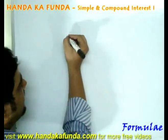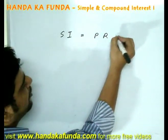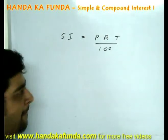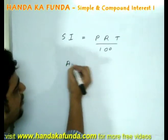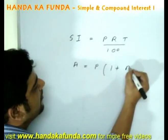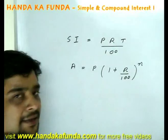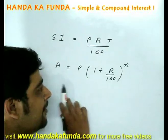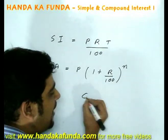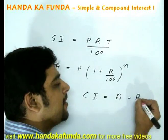Let us look at the formulas. In case of simple interest, it is given by Principal × Rate × Time / 100. For compound interest, we first calculate the total amount, which is given by P × (1 + R/100)^n, where n is the number of years. This is the amount in case of compound interest. If I want to calculate the actual compound interest, it would be the amount minus the original principal.